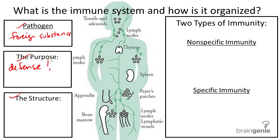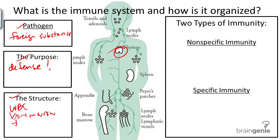The immune system is made up of white blood cells, sometimes called leukocytes, bone marrow, thymus, and other organs and ducts of the lymphatic system.